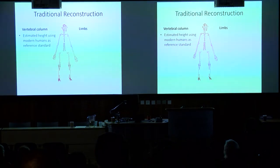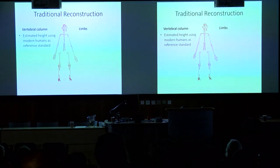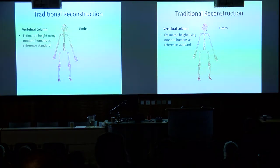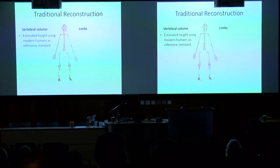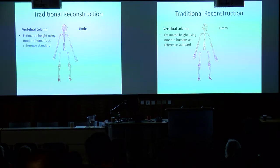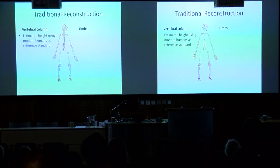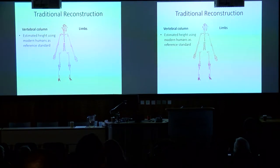For the vertebral column, we estimated height using modern small-bodied humans as a reference standard. We also ran regressions using proportions from chimpanzees, gorillas, taller modern humans, and male/female mixed samples. The most satisfactory answer was using small-bodied modern humans from the Andaman Islands — we had the data, and it fit much more with the proportions evident in Lucy.